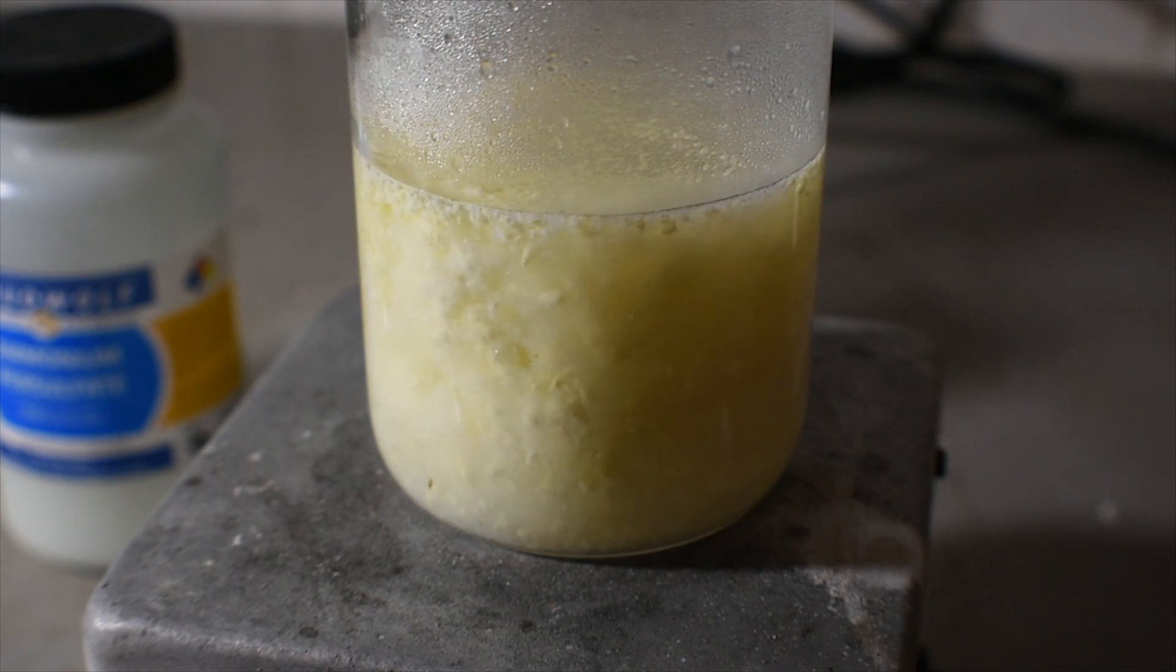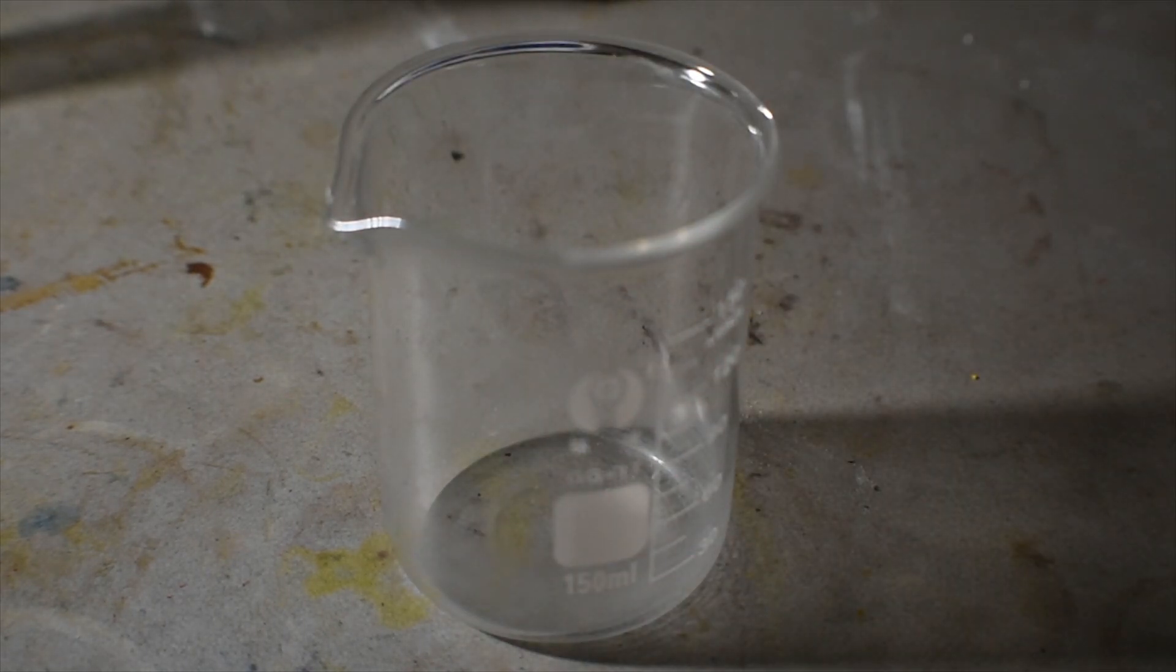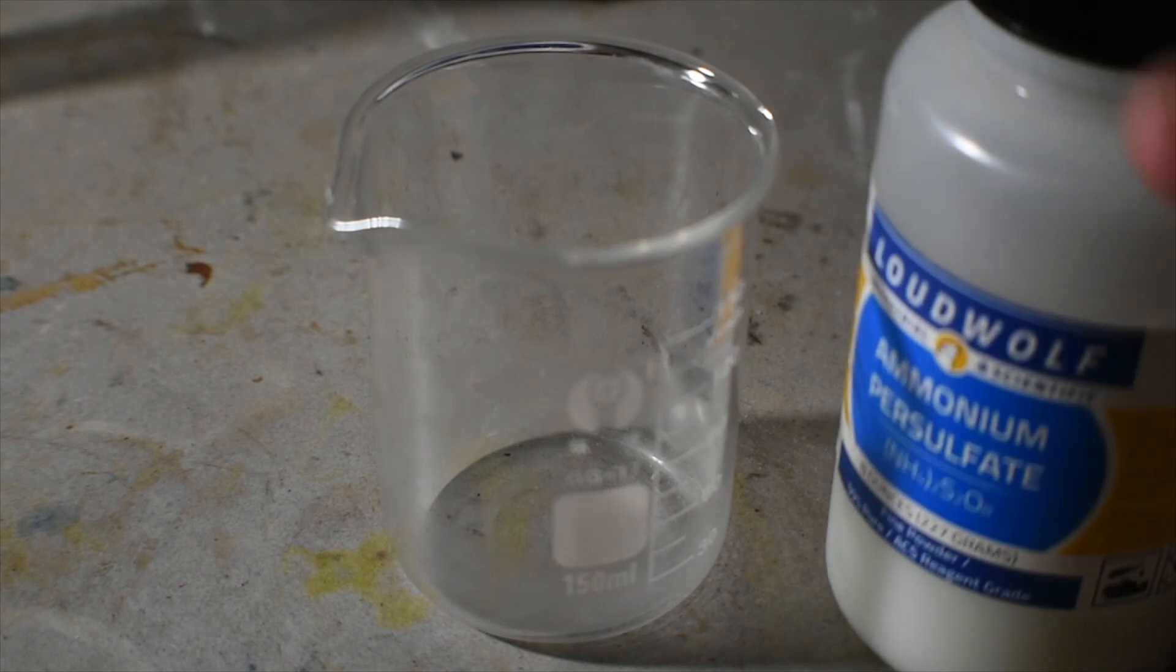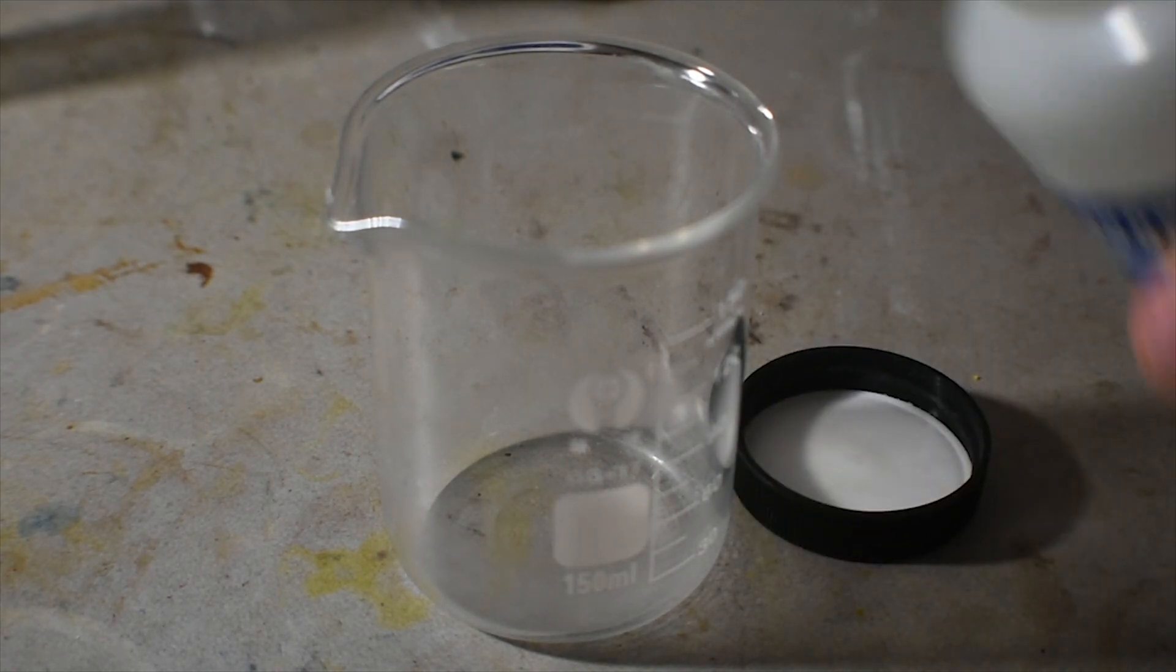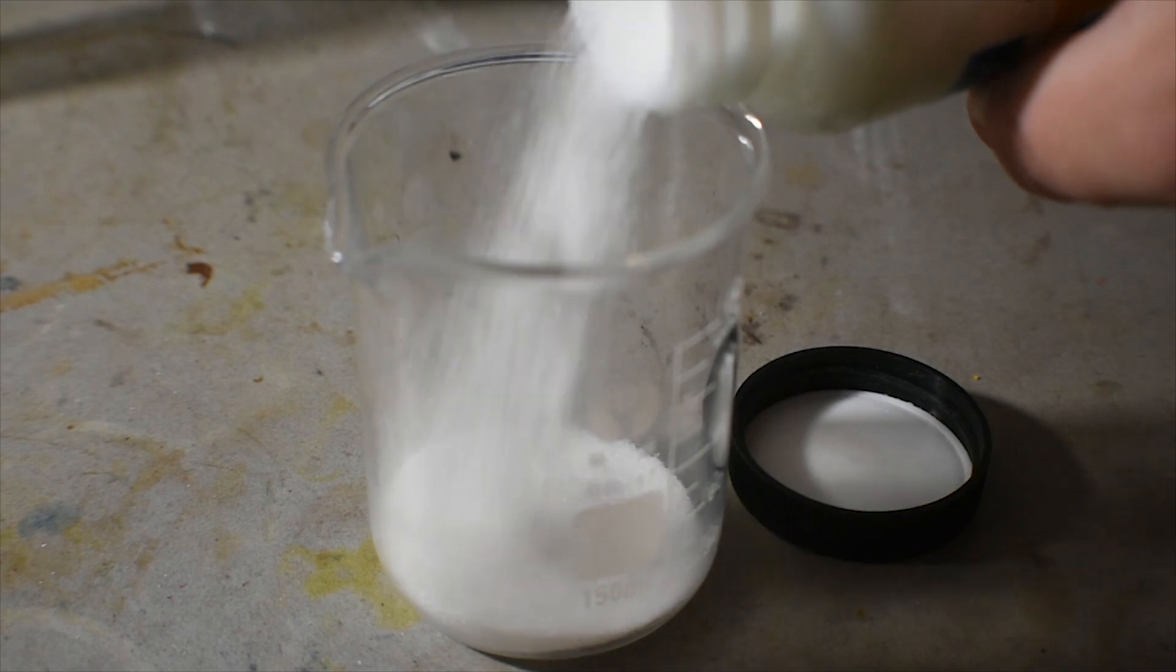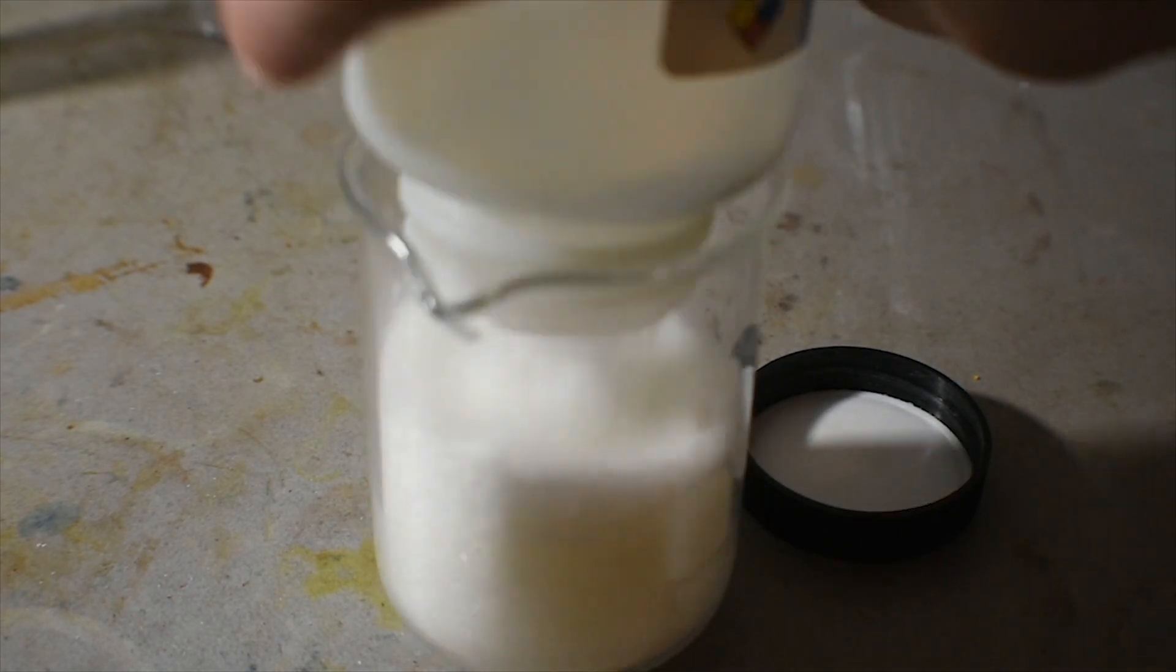While this mixture is stirring, I measured out about five or so grams of ammonium persulfate. The procedure, again, doesn't require any specific amount, so I just went with five grams.